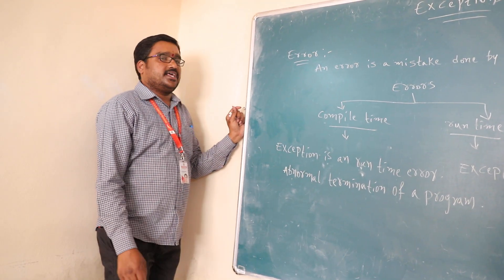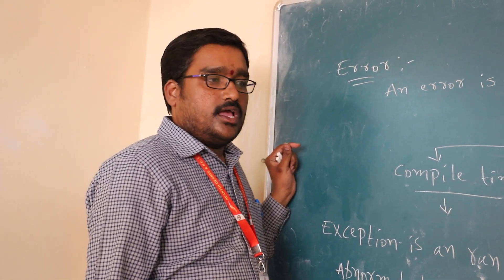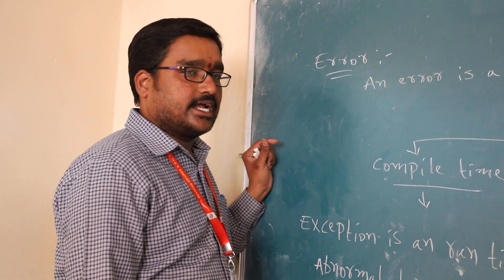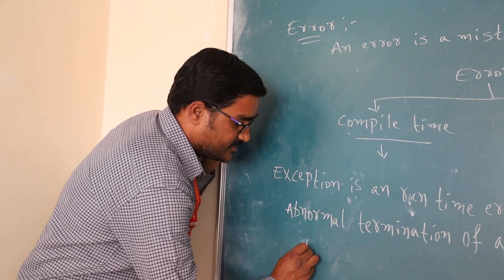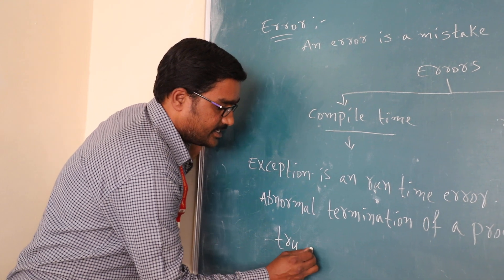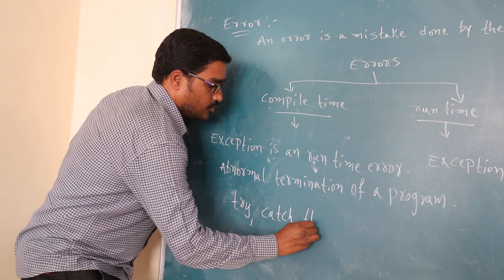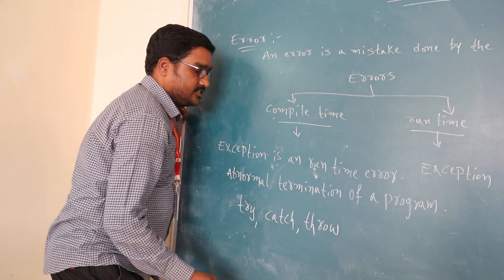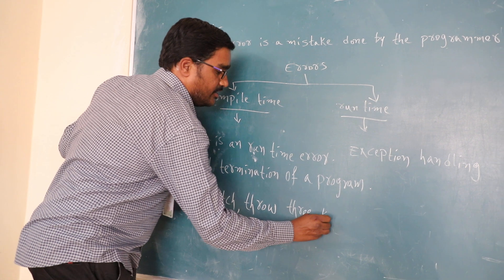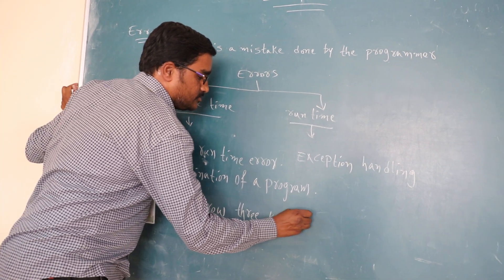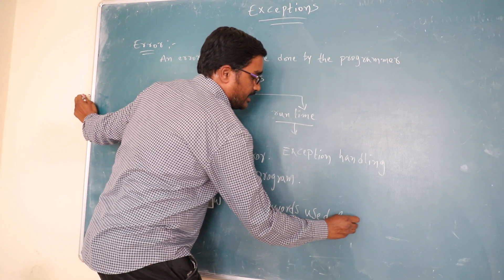In C++, we have a mechanism to handle this exception handling. How to handle this exception handling mechanism is, in C++, we introduce three keywords. The three keywords are: try, catch, throw. Try, catch, throw are the three keywords used for exception handling.